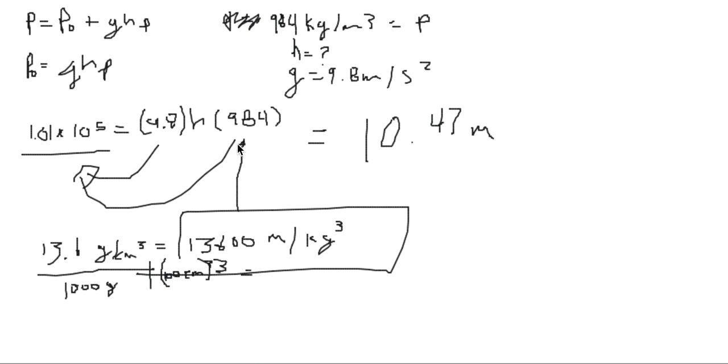Solving for height to see how good the vacuum would work: 1.01 × 10⁵ divided by 9.8 divided by 13,600 gives a height of 0.76 meters.